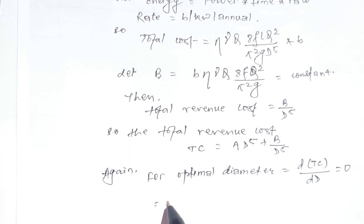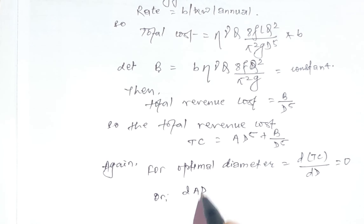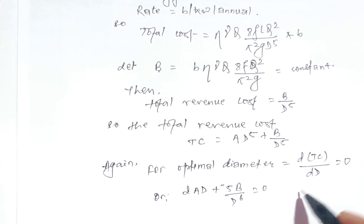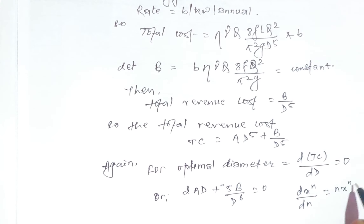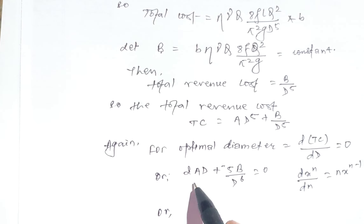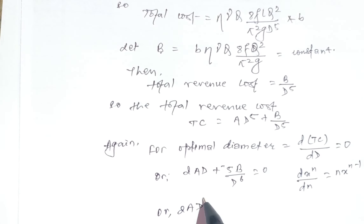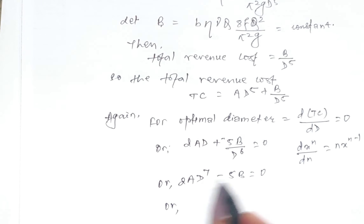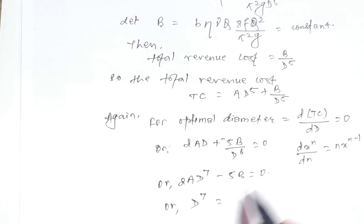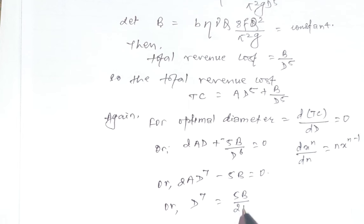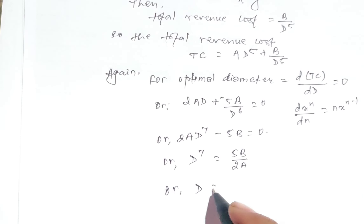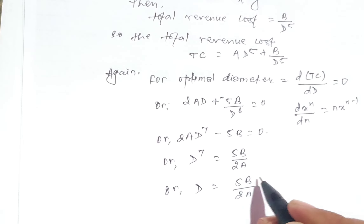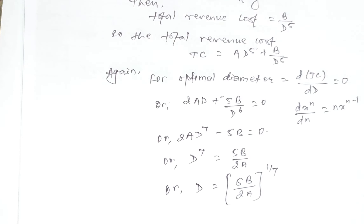Differentiating, we get 2·A·d minus 5·B divided by d⁶ equals zero, using the rule that d(x^n)/dx equals n·x^(n-1). This simplifies to d⁷ equals 5·B divided by 2·A, or d equals (5·B divided by 2·A) raised to the power of one-seventh.